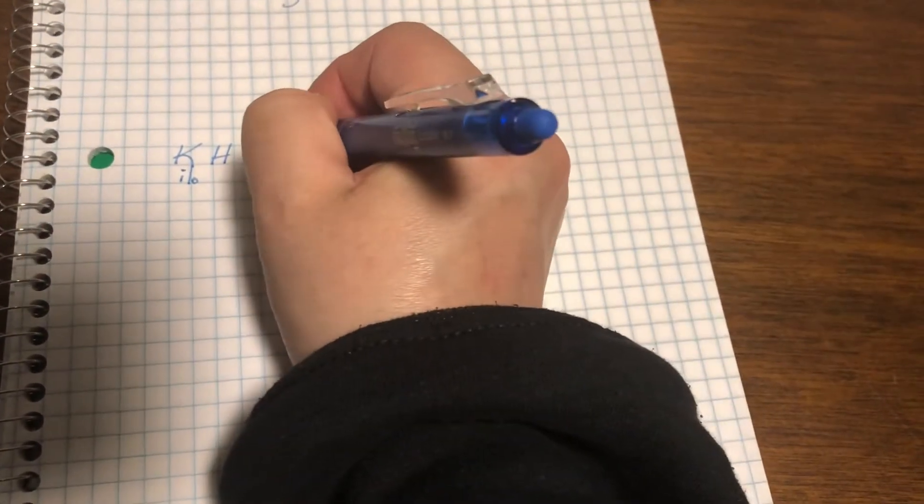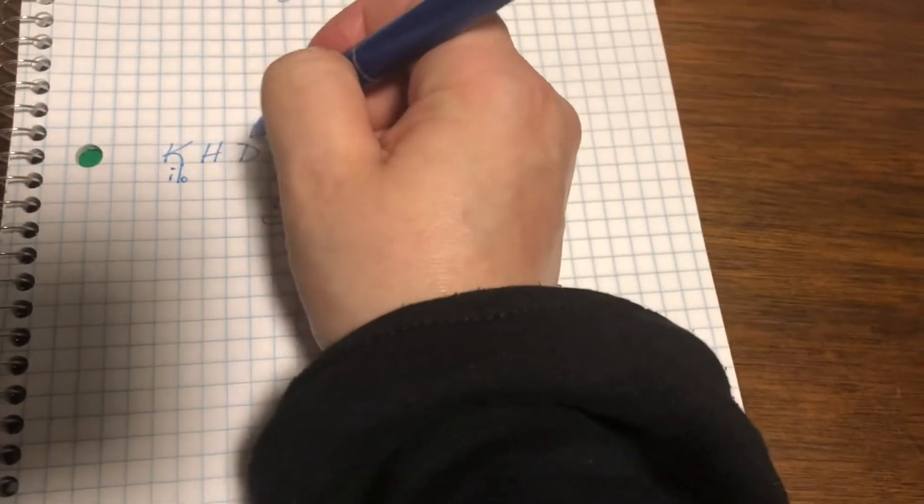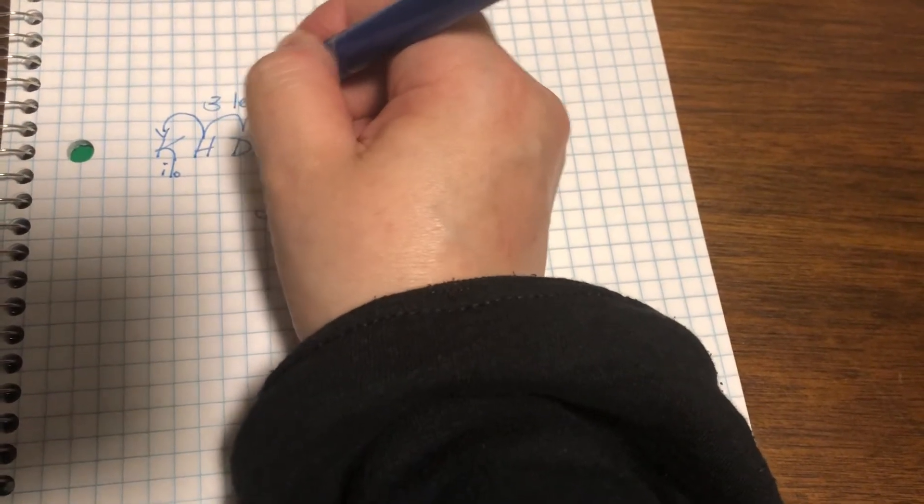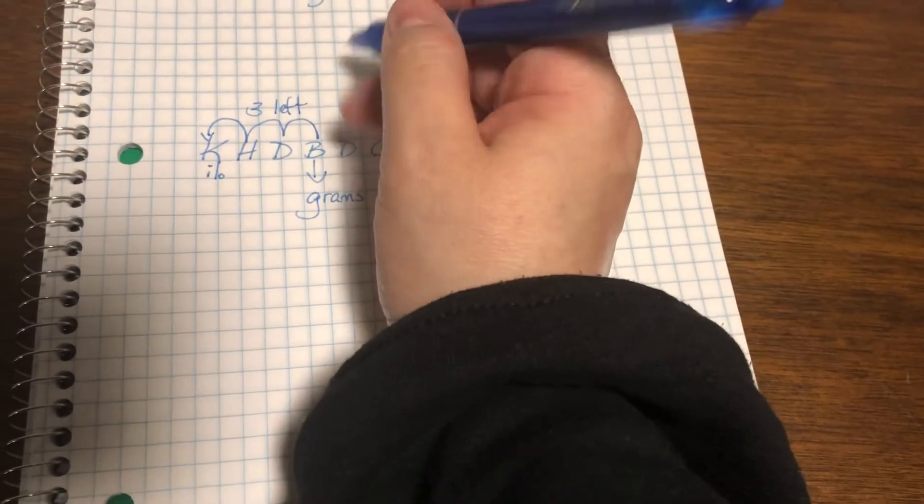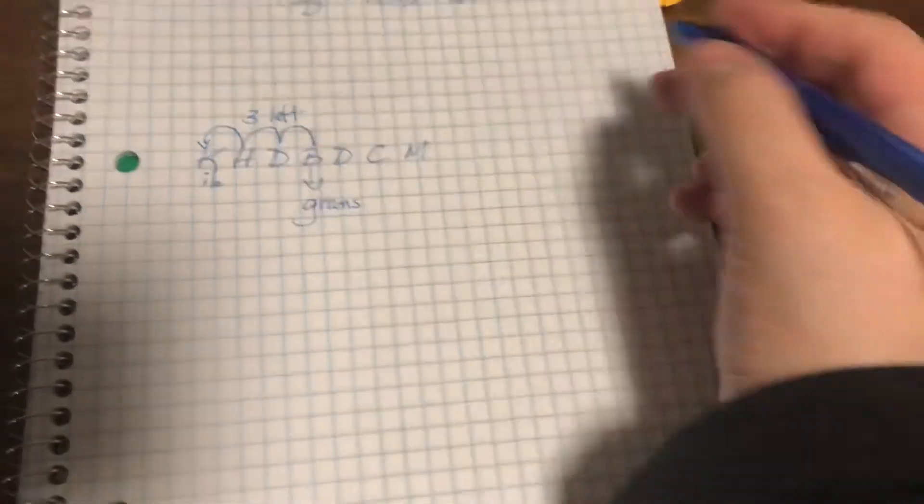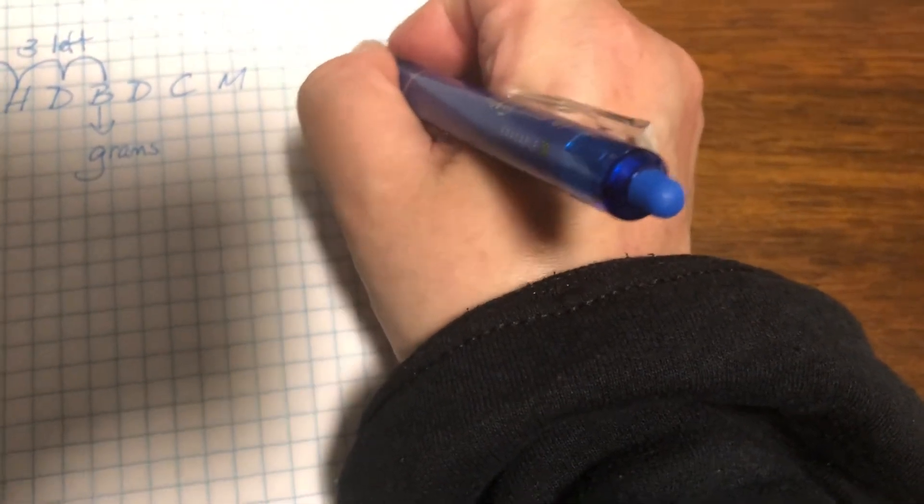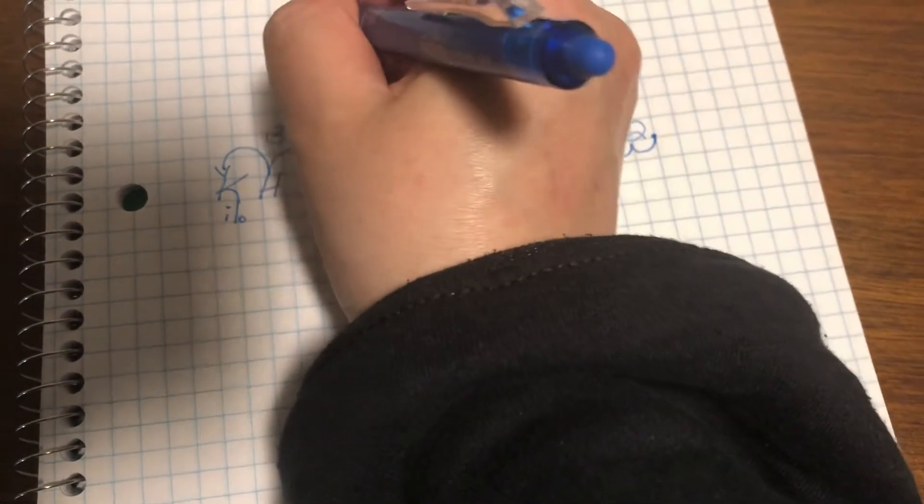So that means I have to move the decimal point one, two, three, to the left. We know that 172 is a whole number, which means the imaginary decimal point would be here at the end. And then I have to move it one, two, three.